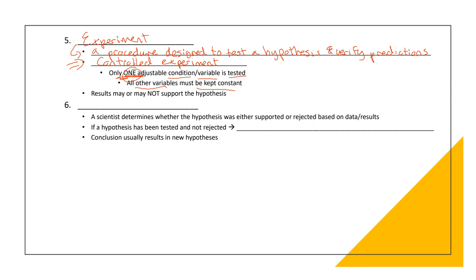At the end of the day, the experiments may tell us whether it may or may not support the hypothesis. It doesn't always have to support the hypothesis. Finally, with conclusion. Based on this experiment and based on the results that we have as a conclusion, a scientist determines whether the hypothesis was either supported or rejected based on the data. If a hypothesis has been tested and not rejected, then we say that it has been tentatively accepted or just supported by the data. And then conclusions may usually result in new hypotheses.